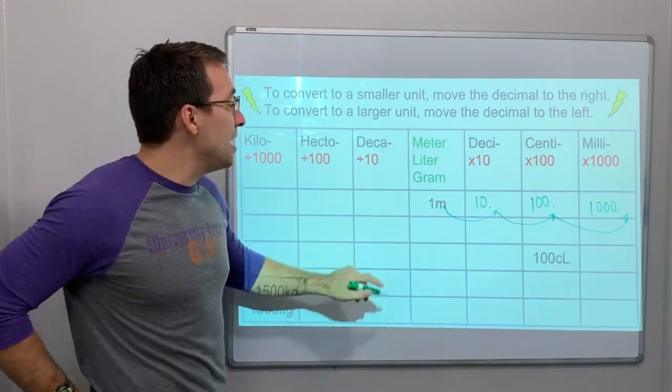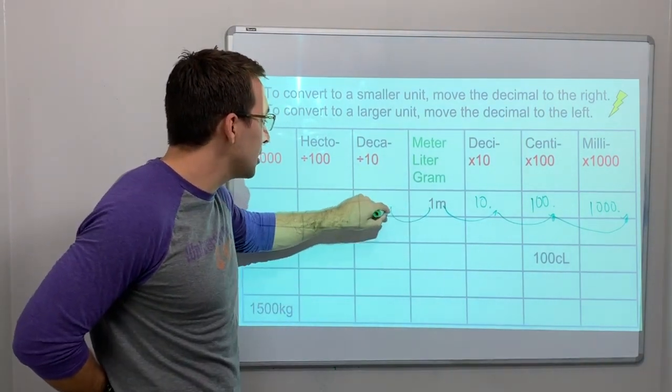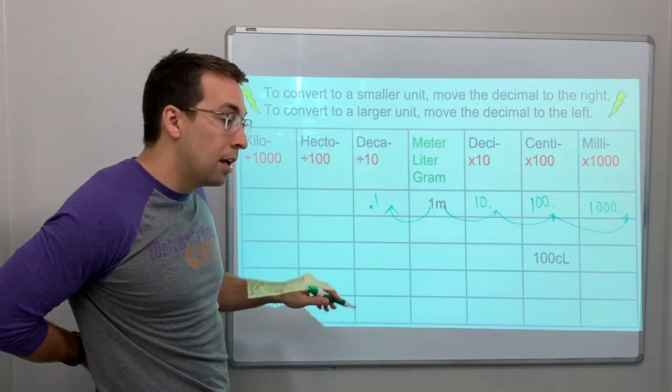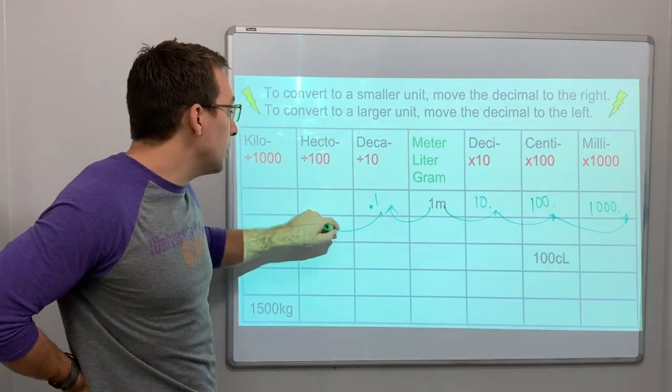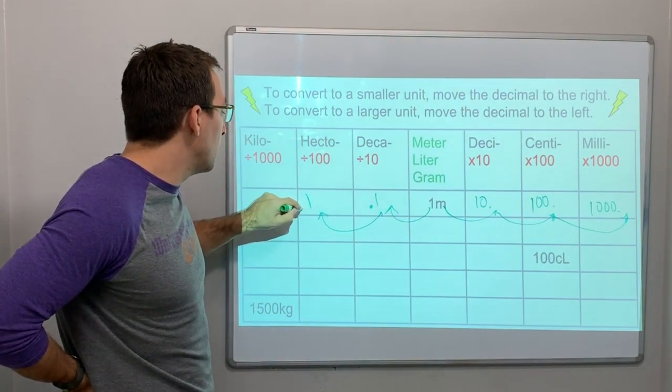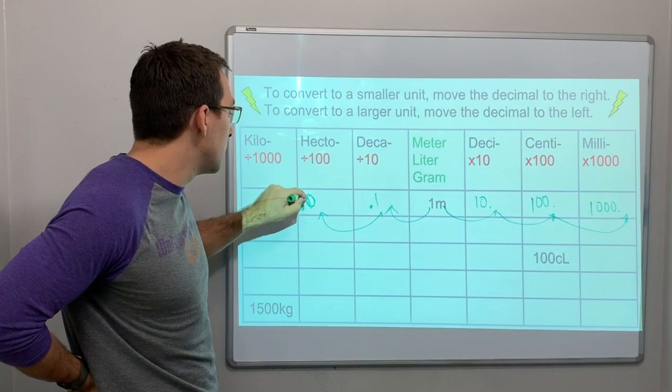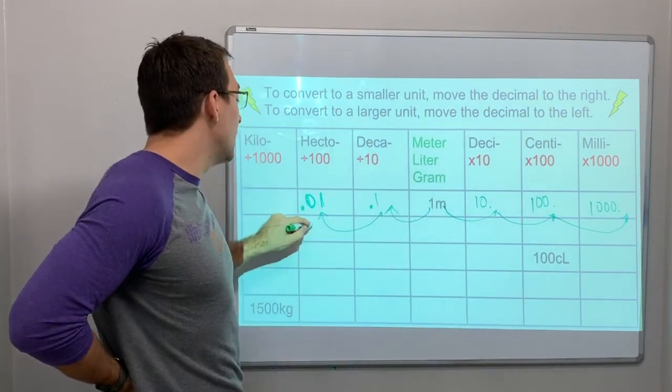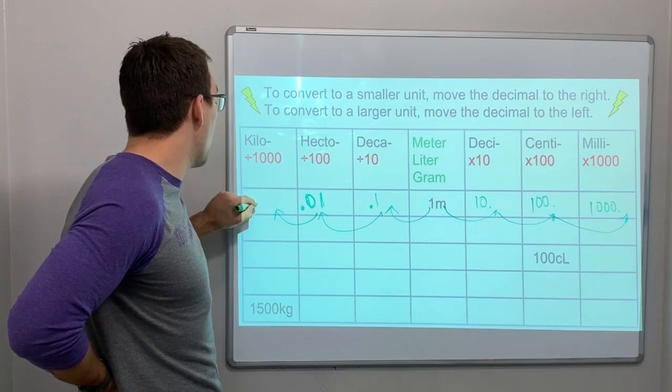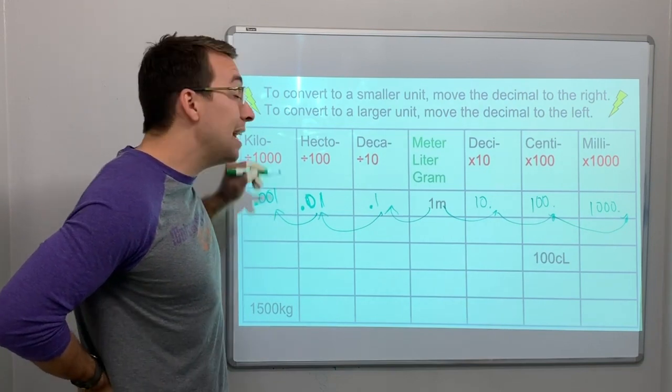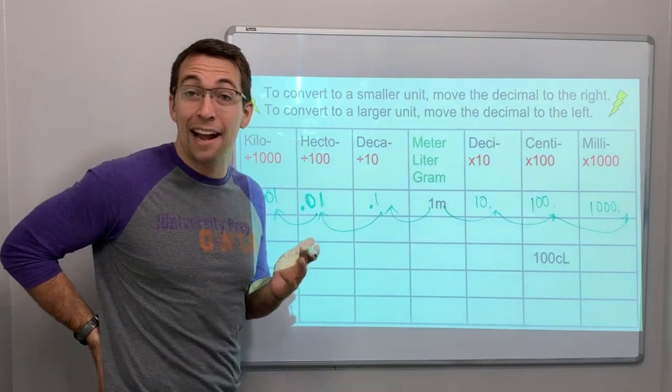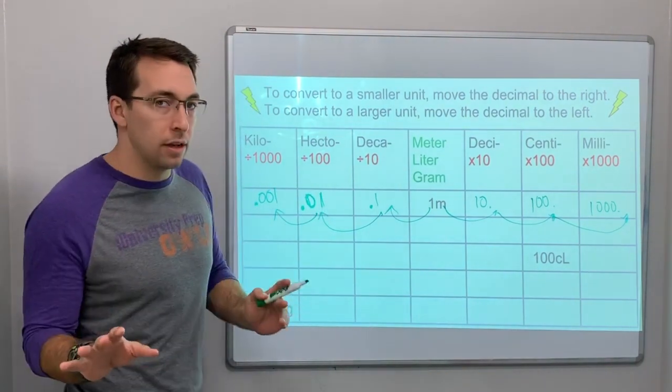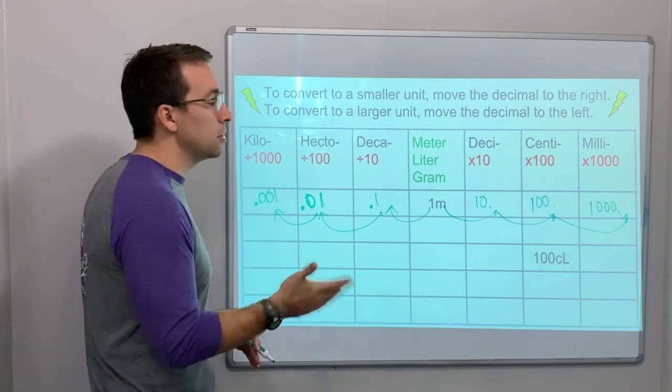Watch this. One meter is, this way, the other direction, one-tenth of a decameter. One meter is one-hundredth of a hectometer. And then one meter is one-thousandth of a kilometer. Isn't that kind of cool? So, again, this is not the first video about unit conversions. So, please watch the other videos.